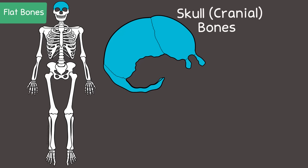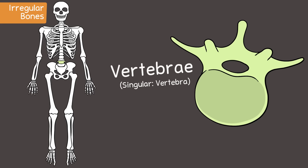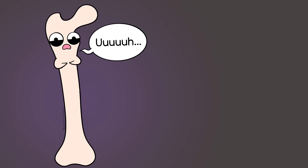Flat bones are often curved and thin — not necessarily flat despite the name. Skull bones (cranial bones) and shoulder bones (scapulae) are examples. Irregular bones have a shape that is, well, irregular — there isn't a specific shape description you can use to define them. Irregular bones can be protective from an assortment of forces. Vertebrae are a great example.